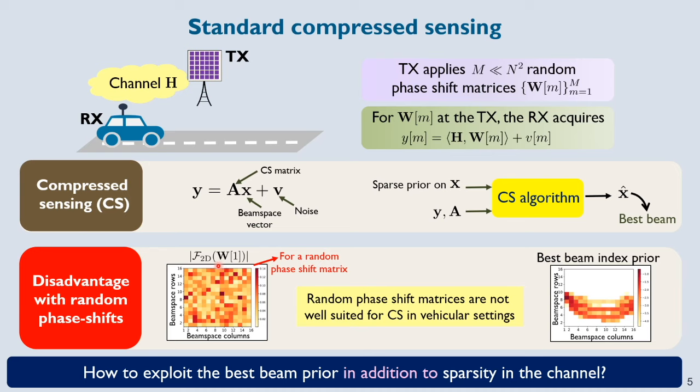It can be noticed from this plot that the beam pattern associated with W is quasi-omnidirectional in nature. And this is a characteristic of random phase shift based matrices with a very high probability. Such quasi-omnidirectional beams are not well suited to this beam prior because they focus power also in directions that are not likely to be optimal. Now we are still left with the question of how to exploit this beam prior in addition to the sparsity of channel.